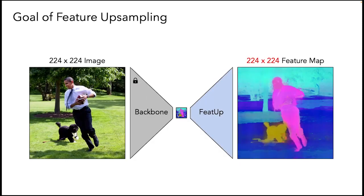We propose FEEDUP, a framework that upsamples any deep network's features to any resolution by combining the semantics from feature maps and the spatial detail from higher resolution inputs.